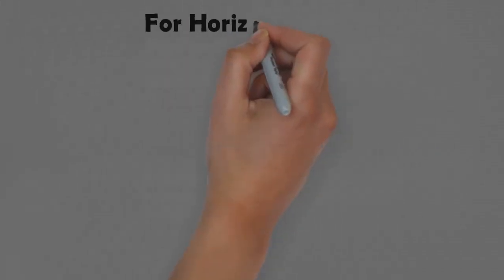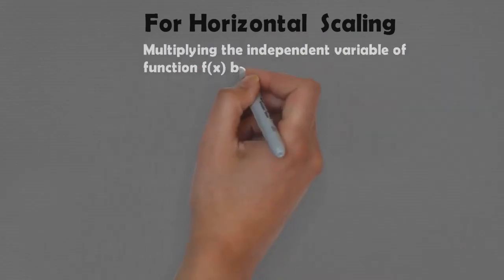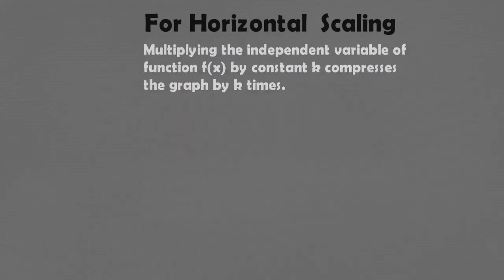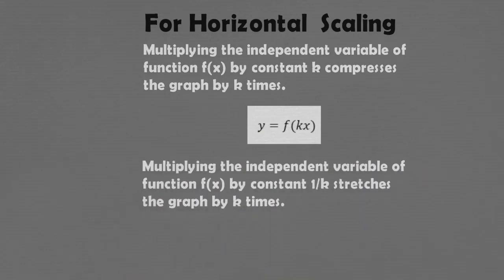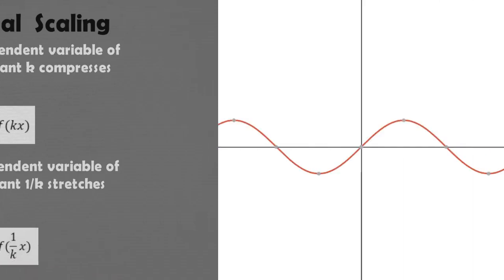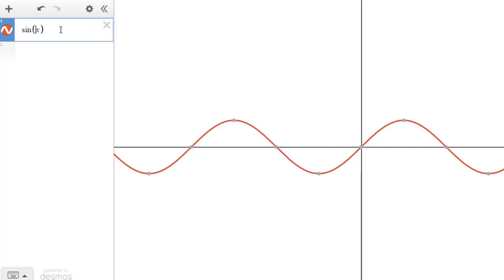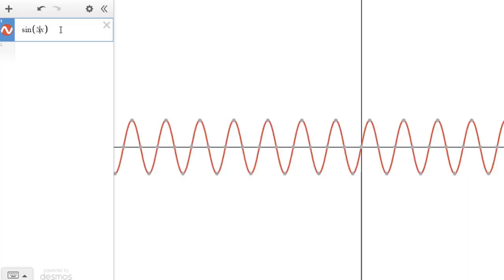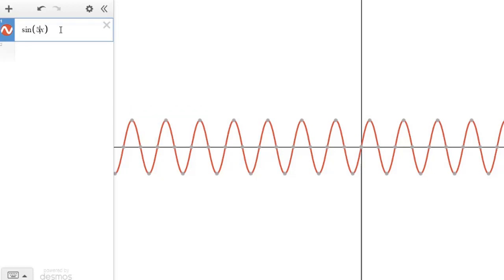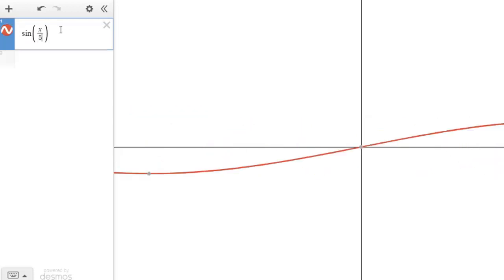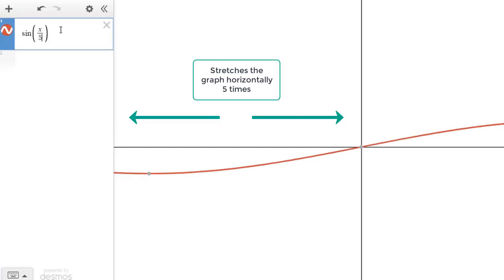For horizontal scaling, multiplying the independent variable of the function by k compresses the graph horizontally by k times, that is y = f(kx). Similarly, multiplying the independent variable by 1/k, that is y = f((1/k)·x), stretches the graph horizontally. For example, with y = sin(x), multiplying x by k = 5 compresses the graph horizontally by 5 times, while multiplying x by 1/5 stretches the graph by 5 times.